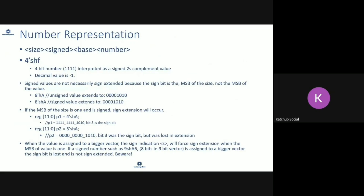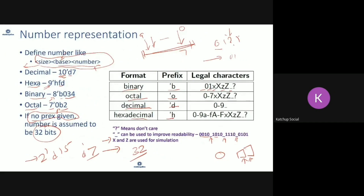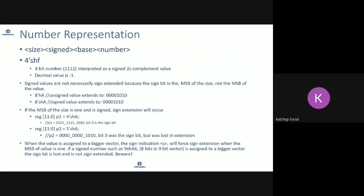Usually numbers are represented by size, base, and value — these are unsigned numbers with no sign. If you want to represent signed numbers, the syntax is: size, then write 's' for signed, then the base and value. For example, a 4-bit signed hexadecimal number is written as 4'sh followed by the hex value, and it is stored in two's complement — for instance, representing minus one.